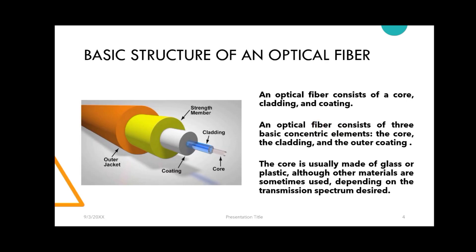We call it the equation C by V. An optical fiber consists of a core, cladding, and coating. The core is the innermost part, surrounded by the cladding, with an outer coating on top.